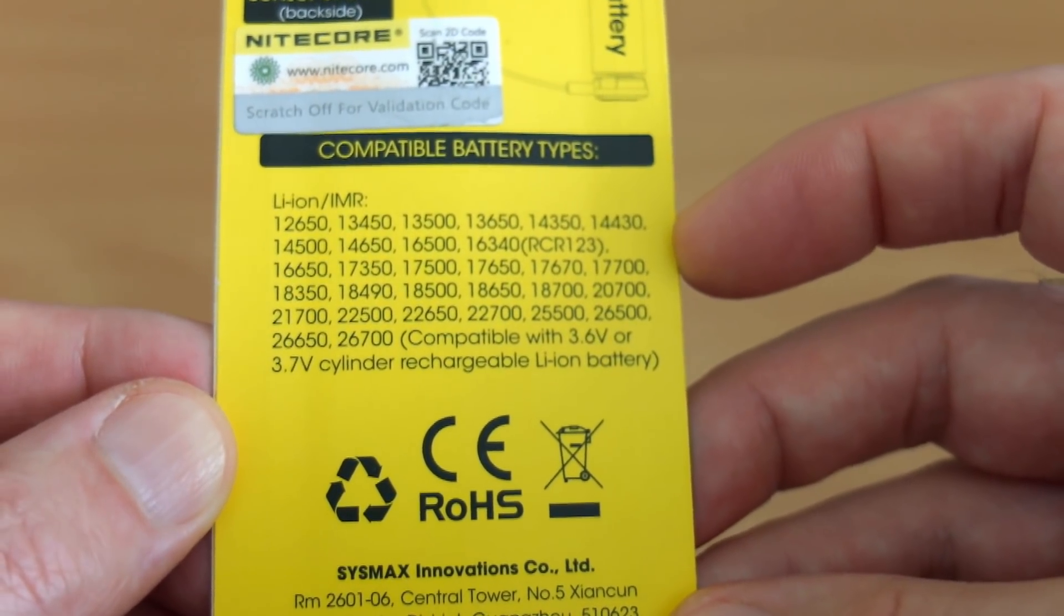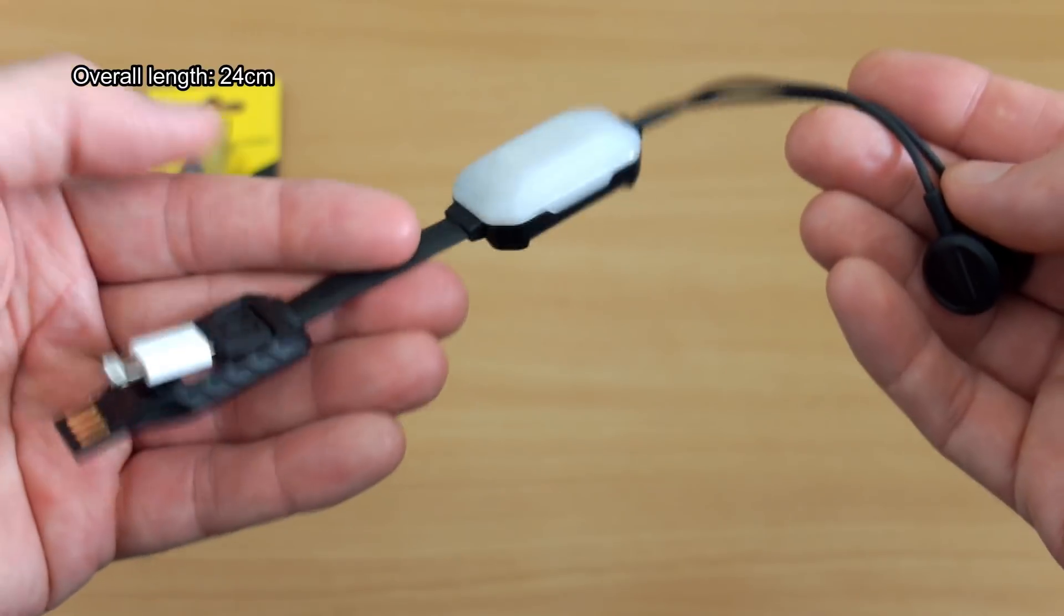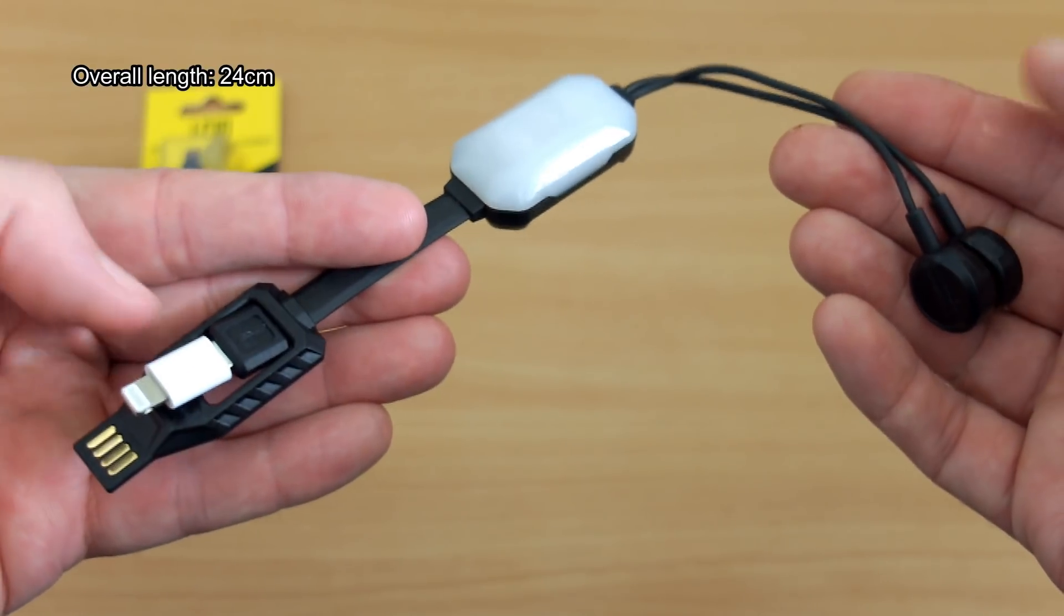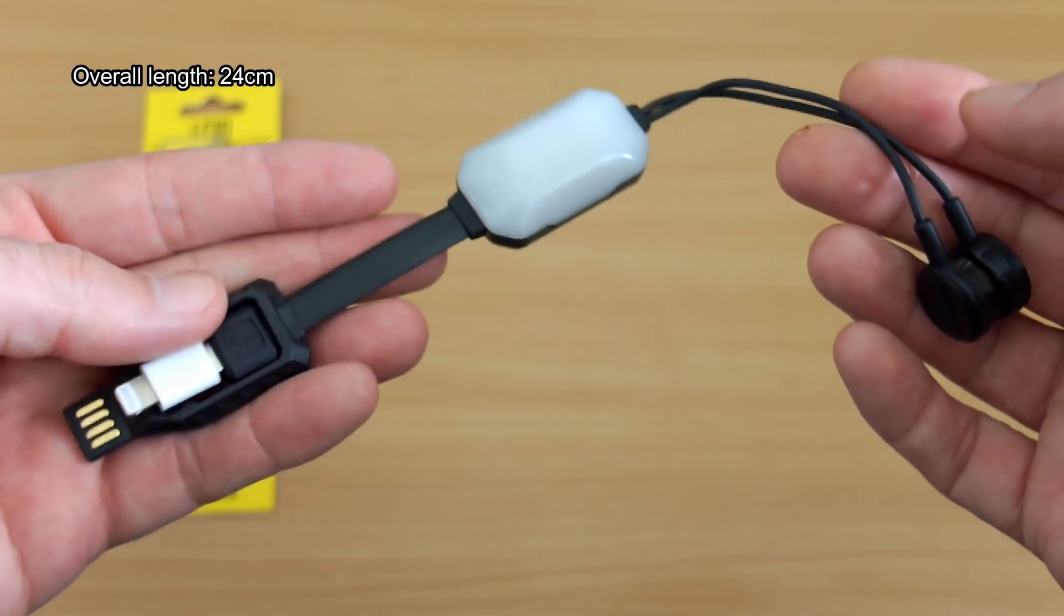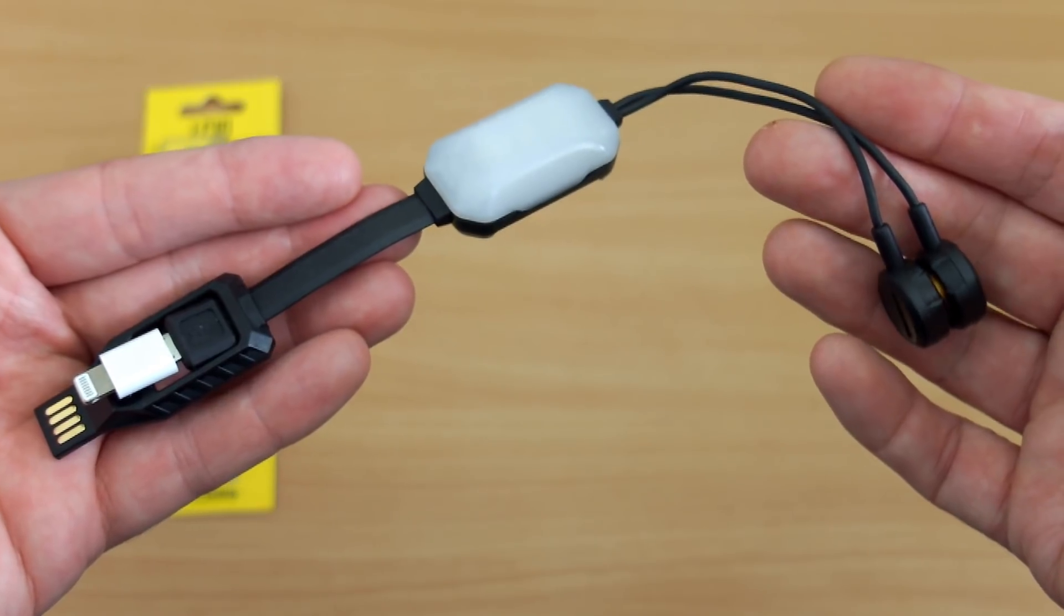Any 3.6 or 3.7 volt lithium batteries. A quick look at the unit: 24 centimeters in length, so it's a bit smaller than the Olight magnetic charger in terms of overall length.